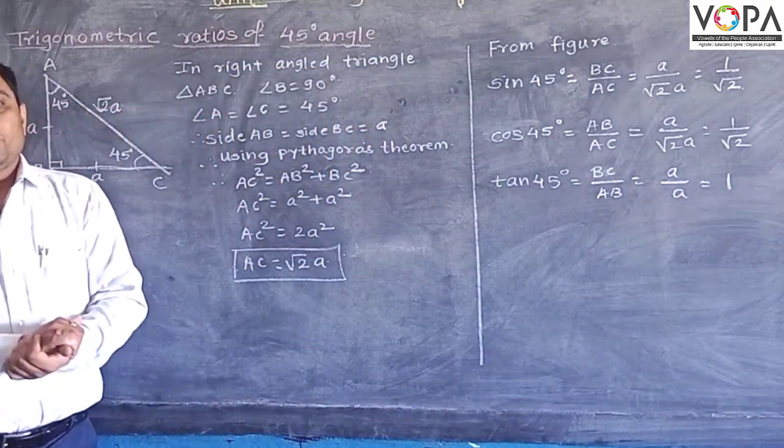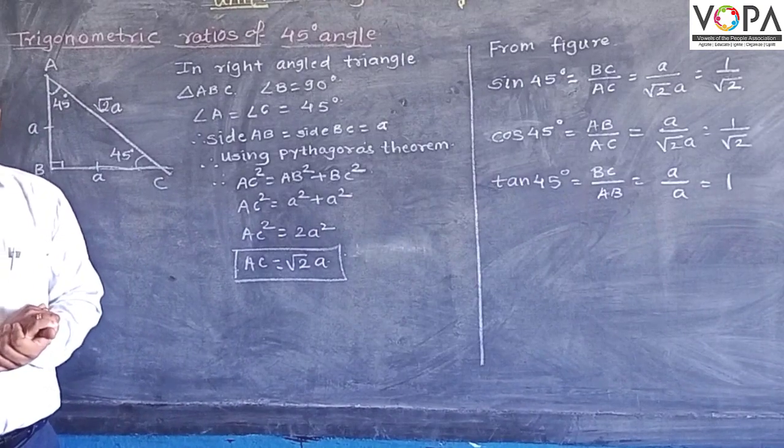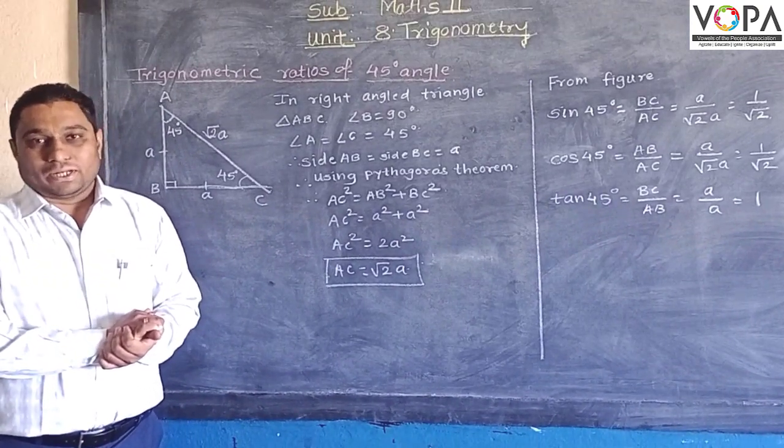In this way, we can calculate the three trigonometric ratios: sine, cosine, and tangent.